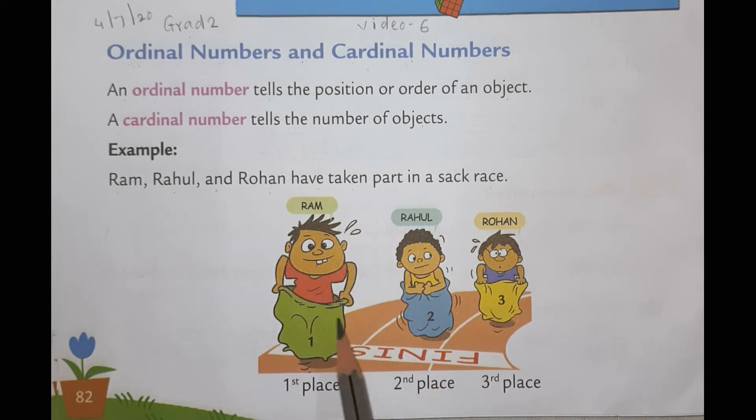So they started running and Ram comes first. Ram finishes the race at first place. Rahul finishes at second place. And third one comes who? Rohan. Third place.